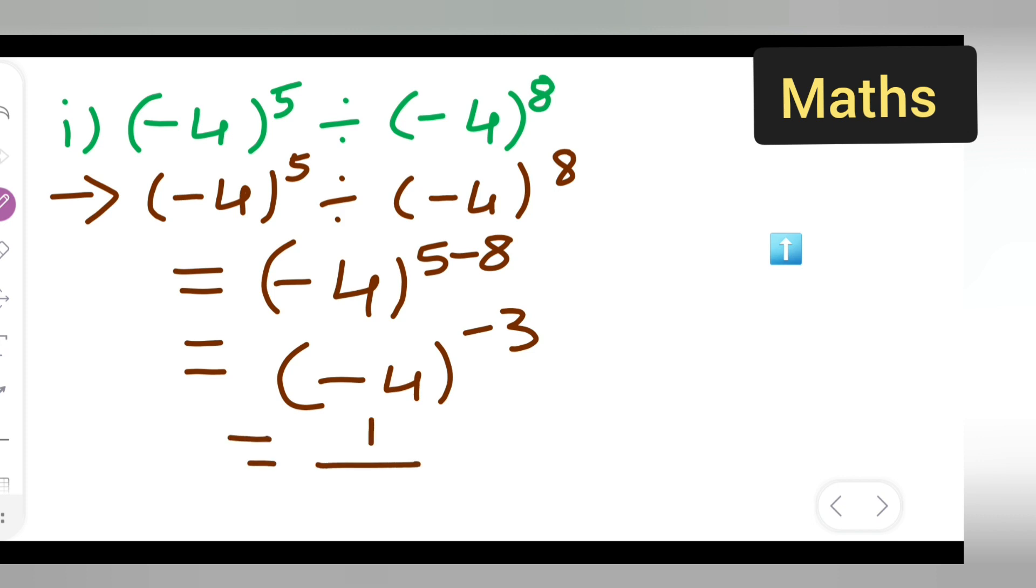You all have to write down 1 upon minus 4 raised to power of 3 positive 3. Reciprocal I have taken so that I get a positive degree.